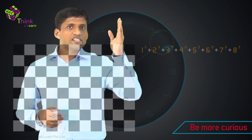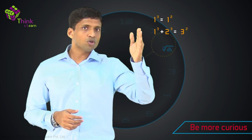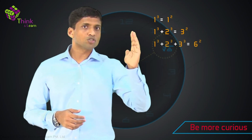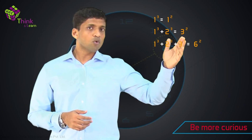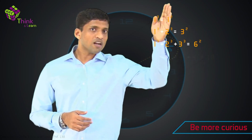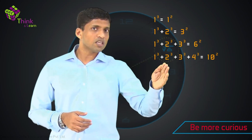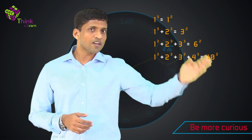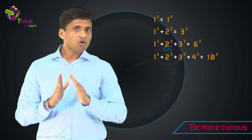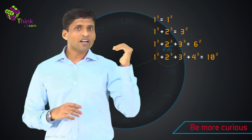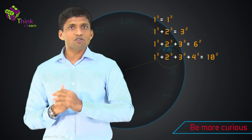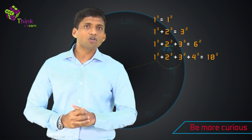What is the pattern? We discussed that 1 cube equals 1 squared, 1 cube plus 2 cube equals 3 squared, 1 cube plus 2 cube plus 3 cube equals 6 squared, and 1 cube plus 2 cube plus 3 cube plus 4 cube equals 10 squared. These are squares of triangular numbers. How these two are connected using a diagram is what we are going to do first.